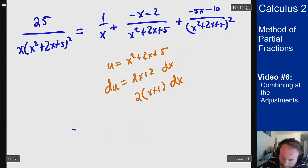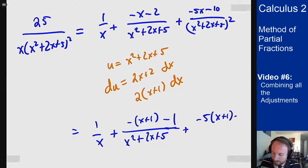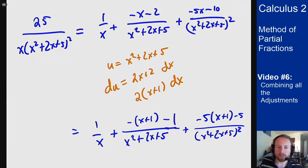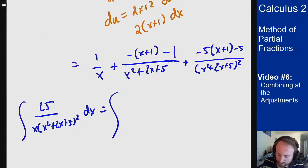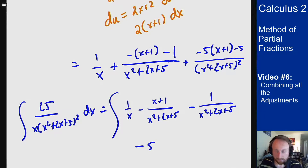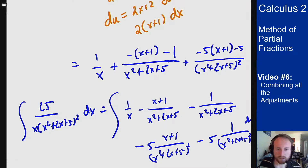We rewrite the decomposition as: 1/x + (−x + 1)/(x² + 2x + 5) — noting that gives −x + 1, so we're missing a −1 — plus (−5x + 1)·... giving −5, so −5/(x² + 2x + 5)². Splitting this up allows us to actually integrate each piece.